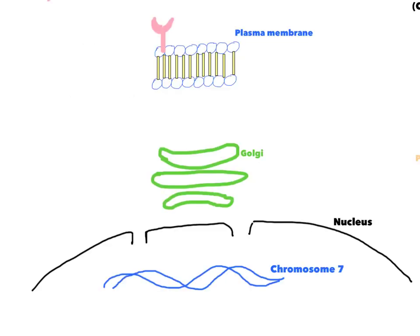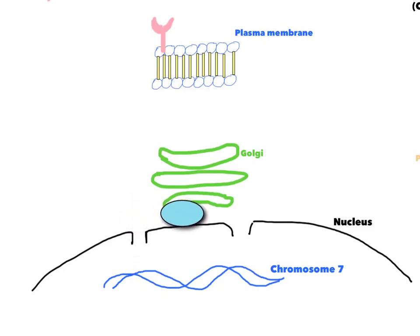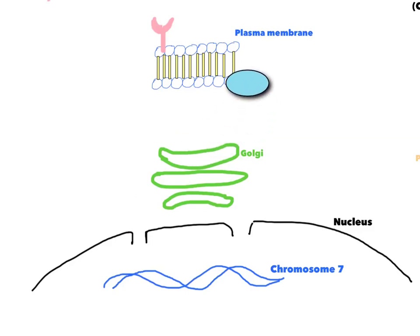Now on to the molecular pathophysiology of cystic fibrosis. Here we have a diagram of the inside of a cell — nucleus, plasma membrane, Golgi apparatus, all of that. In cystic fibrosis, the normal gene product of CFTR, which is on chromosome 7, gets produced in the nucleus, translated into a protein in the cytoplasm, processed in the Golgi as usual, and then reaches the plasma membrane.